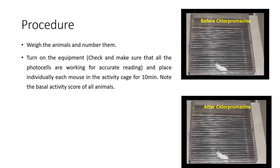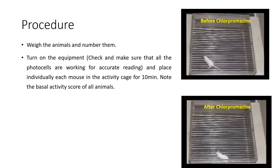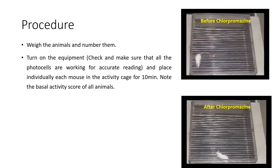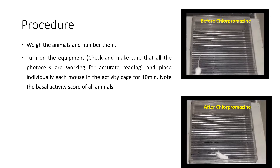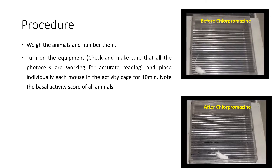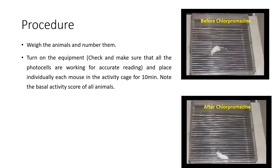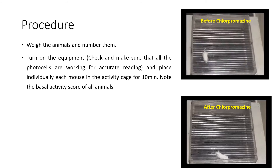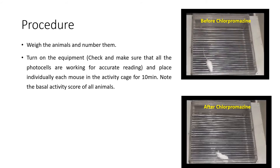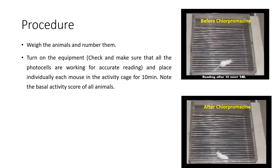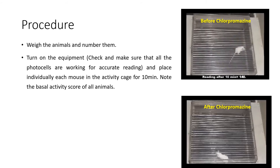Before chlorpromazine, when we place the animal into the activity cage, as the animal moves, the beam of light falling on the photocell is cut off and recorded as a count. The animal is moving freely. We let the animal move in the activity cage for about 10 minutes, and after 10 minutes we record the reading. The reading after 10 minutes comes here as 140.